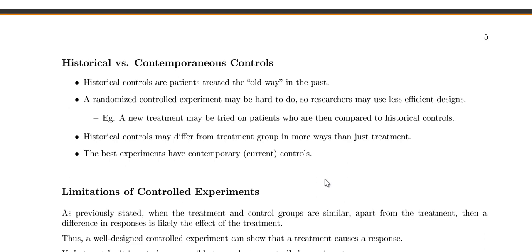Now let's talk about historical versus contemporary controls. Historical controls are patients that were treated the old way in the past. A randomized experiment may be hard to do, so researchers may use less efficient designs such as historical versus contemporary controls — trying a new treatment and comparing it to historical data from people treated with the old way. However, historical controls may differ from the treatment group in more ways than just the treatment. If we're comparing our new treatment to people who got treatment 20 years ago, diets, exercise patterns, and other things may have changed. So the best experiments have contemporary or current controls.